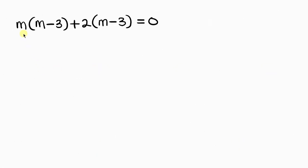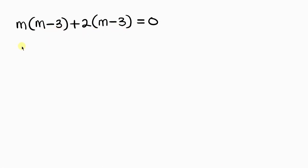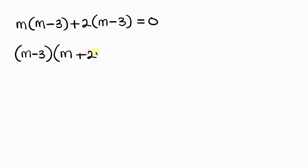Notice that (m minus 3) is common in both groups. Factoring out (m minus 3), we get (m minus 3)(m plus 2) equal to 0.